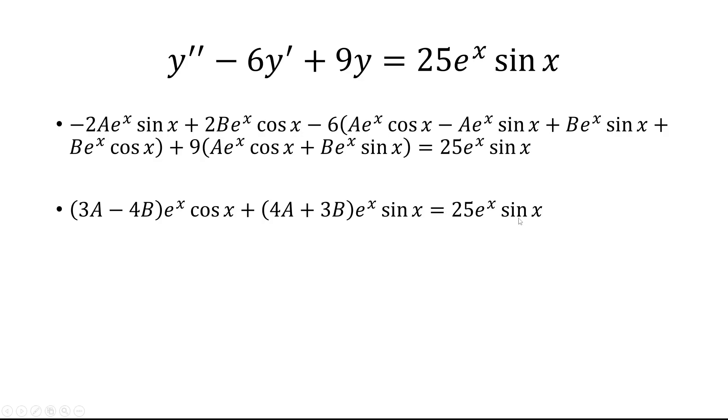So here, I don't have a e to the x cosine x, so I better let 3a minus 4b equal to 0. And 4a plus 3b has to equal 25, and here we have a system of two equations, two unknowns, so we get a is 4 and b is 3.